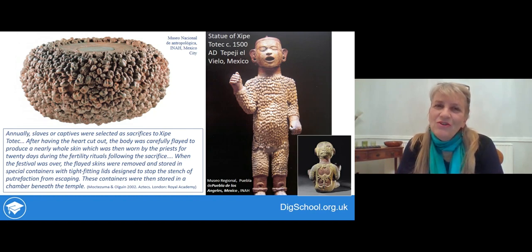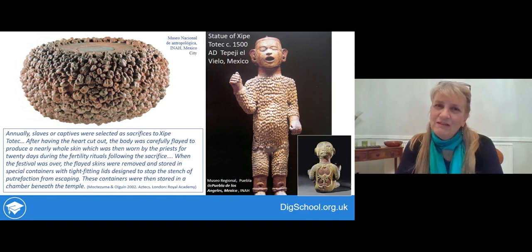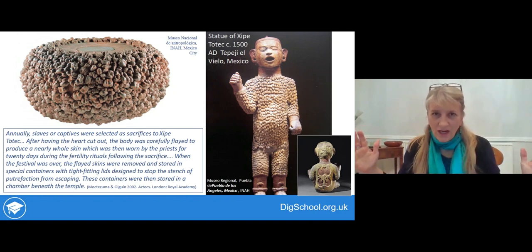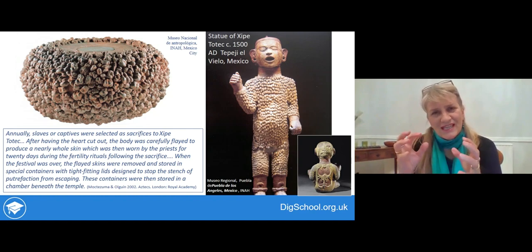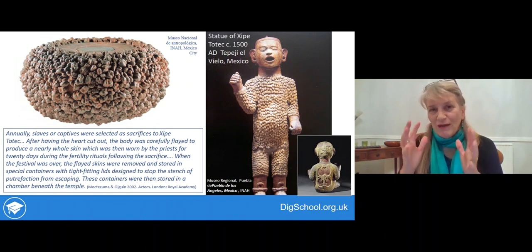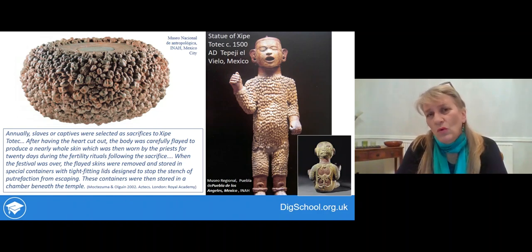I wonder if you concluded that that round object was a container for one of those skins — and if you did, you'd have been absolutely right, because that's what this container is. If you look carefully at the scale on the first slide, you can see it's quite large. The reason it's bobbly on the outside is the same reason that the statue of Chepetotec is also blobby on the outside — it's actually representing the inside of the human skin with all the fat on it when it's been turned inside out and worn as a costume.